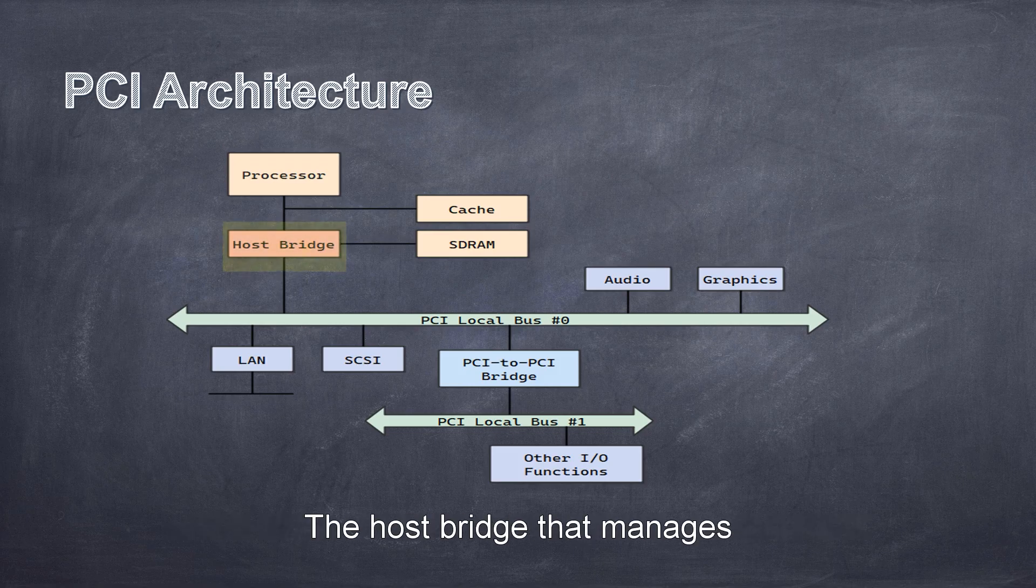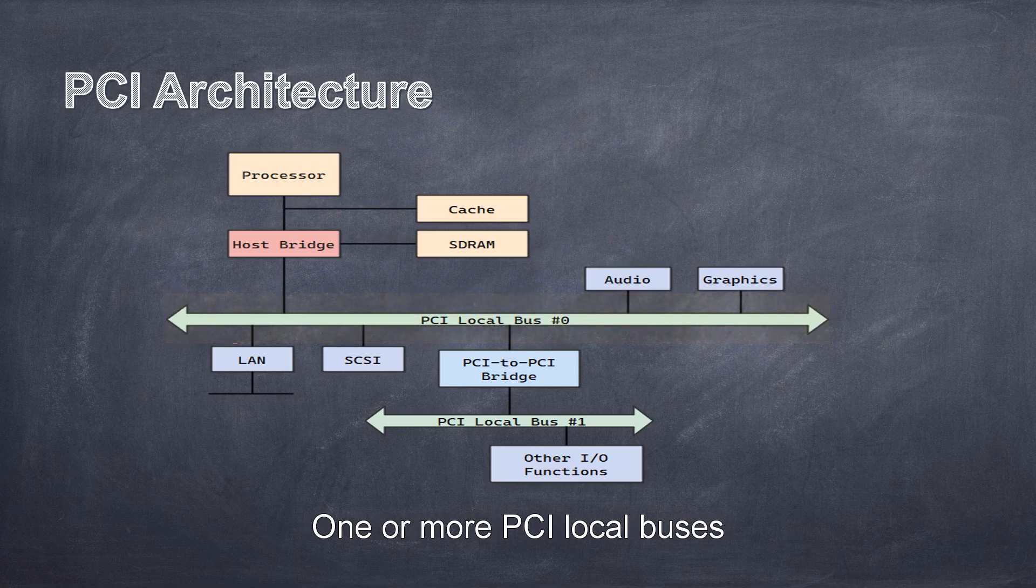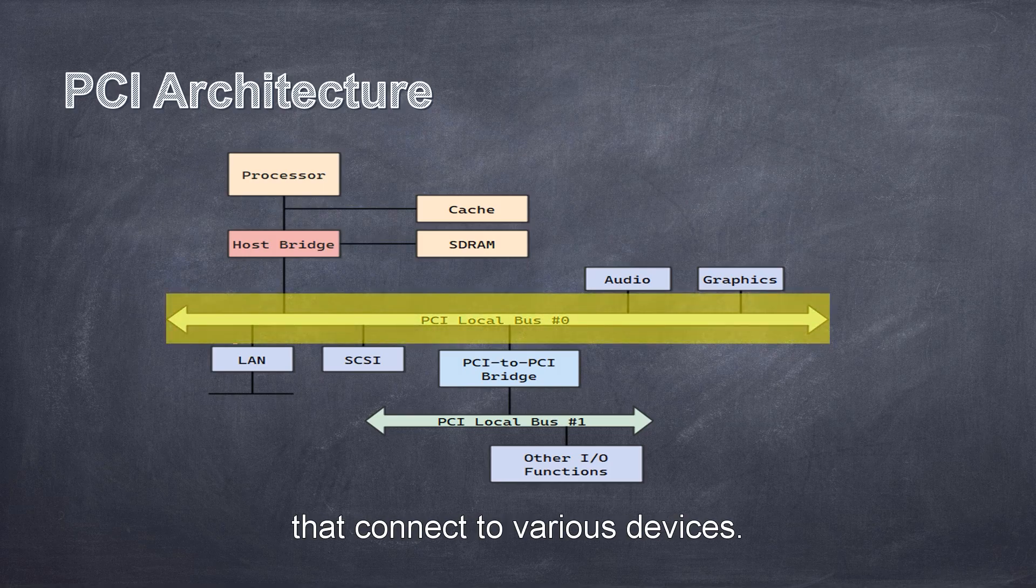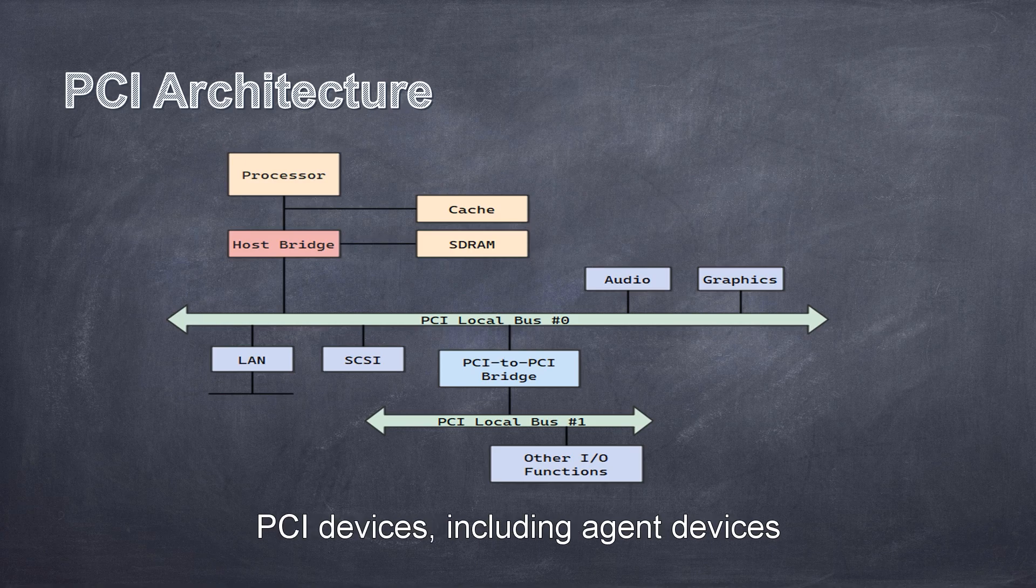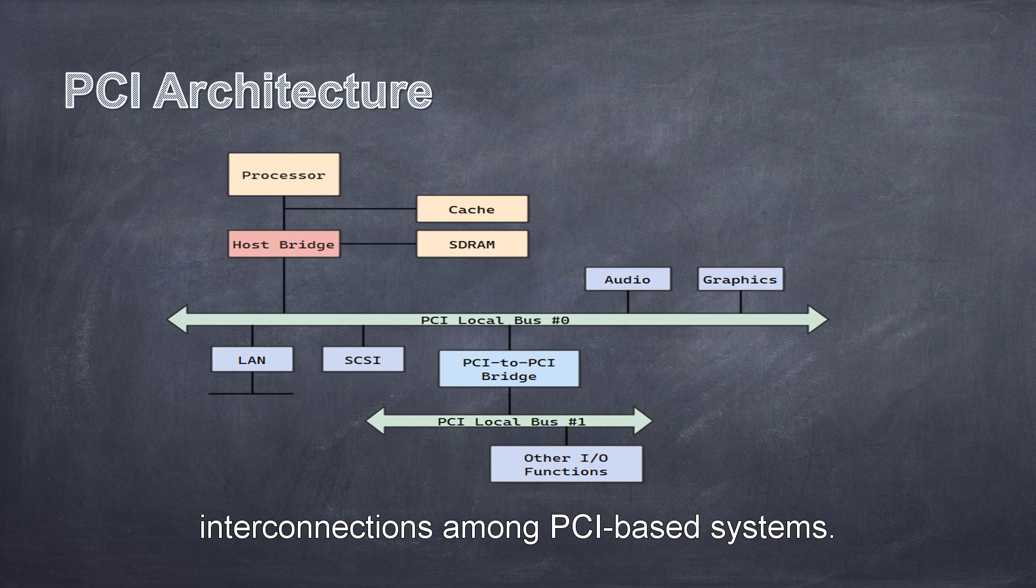This diagram illustrates the mechanism of a PCI-based system, which consists of the following main components: the host bridge that manages the PCI segment and connects CPU to the PCI bus, one or more PCI local buses that connect to various devices, and PCI devices including agent devices and bridge devices. The PCI to PCI bridge is a bridge device that extends the PCI bus, allowing for large-scale interconnections among PCI-based systems.